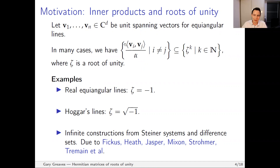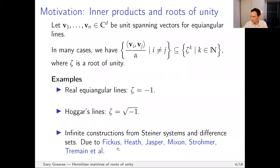This is not a strange restriction, because a lot of constructions have this form. Symbolically, if we divide the inner products by alpha, we just get a bunch of roots of unity. Examples of these are all real equiangular lines — there your root of unity can be taken to be minus one. Hoggar's lines is another example where square root of minus one is your root of unity. And there have been many other constructions, including infinite constructions coming from Steiner systems and difference sets, due to many different authors.